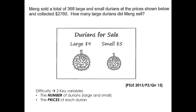Let's take a look at this question. This question is taken from PSLE 2013, Paper 2, Question 15. Meng sold a total of 368 large and small durians at the prices shown below and collected $2,760. How many large durians did Meng sell? It's given in the question that each large durian costs $9 and the small durian costs $5.